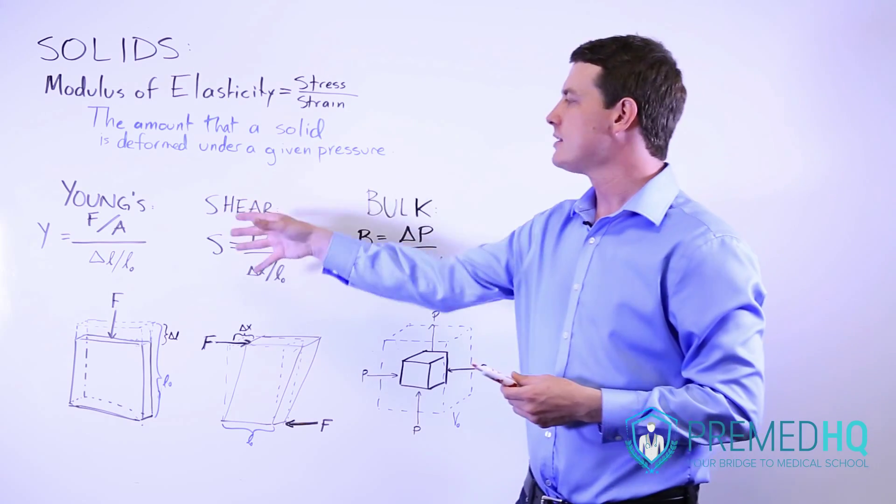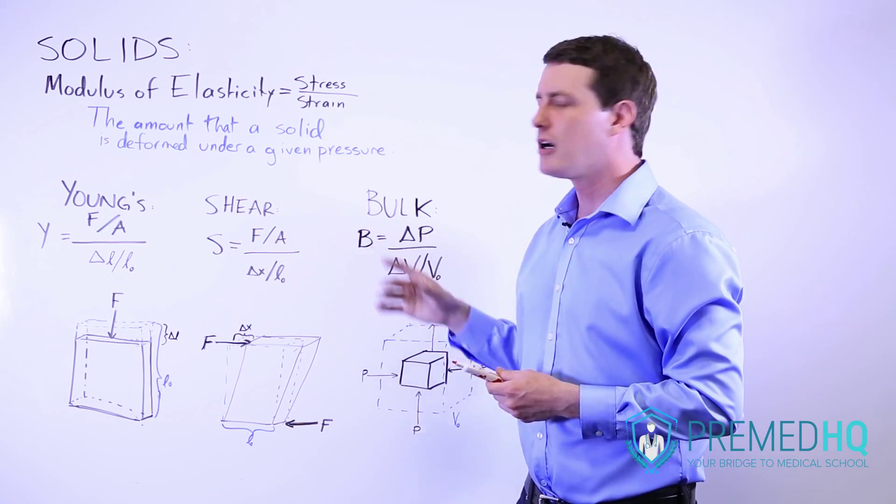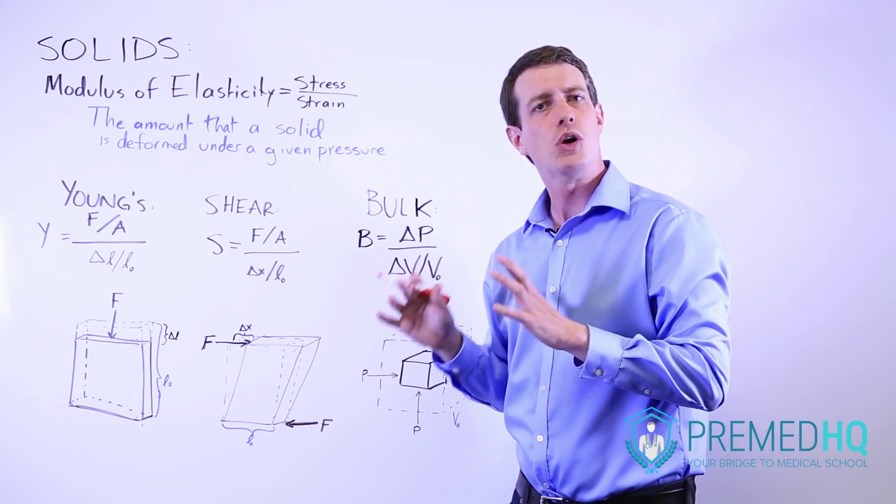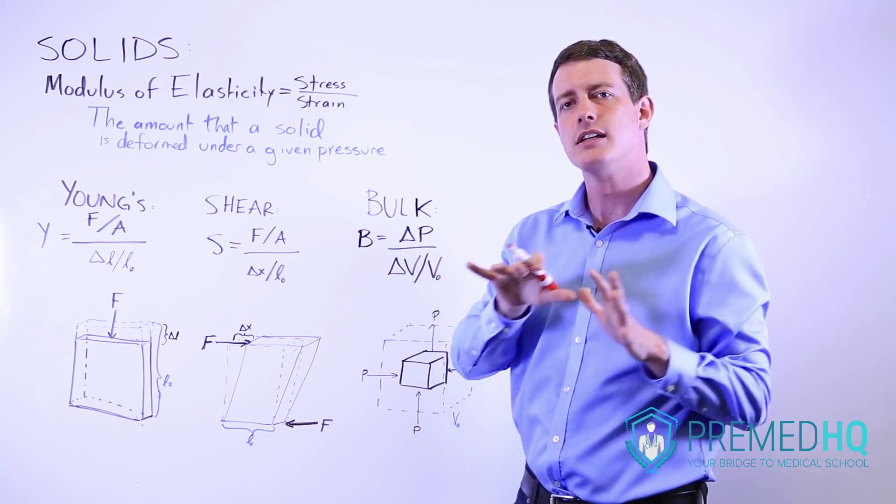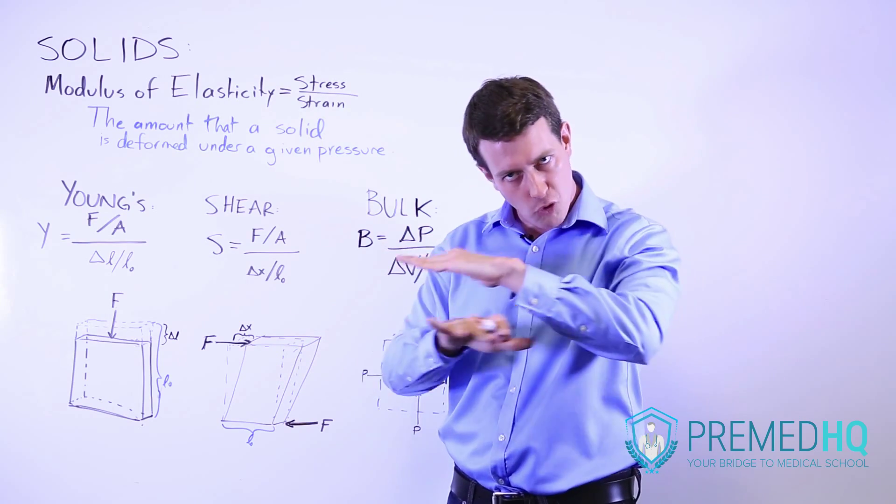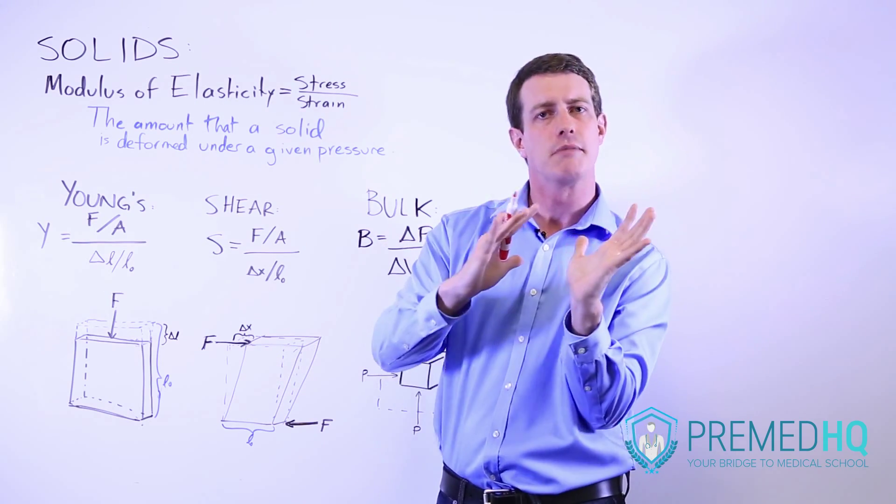So once again a very similar formula but the shear modulus might be something you encounter with a tennis shoe or anything that's supposed to withstand pressure going in a certain direction and it kind of gets malformed in a shear-like manner.